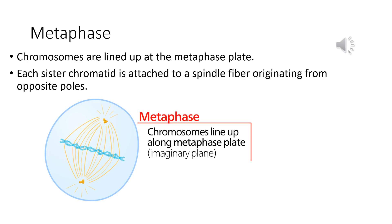Next comes the metaphase. Chromosomes are lined up at the metaphase plate. You can clearly see all the chromosomes lined up at the metaphase plate. Each chromatid is attached to a spindle fiber originating from the opposite poles. The most important thing is that all the chromosomes are lined up in an imaginary plane — this occurs in the metaphase.